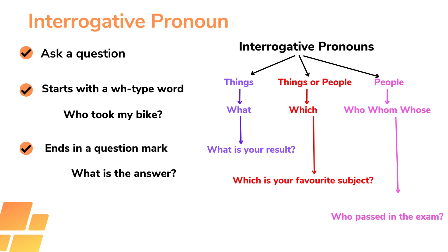Similarly, the second example is: 'Which is your favorite subject?' — the word 'which' is used for things. And lastly, the third example: 'Who passed in the exam?' — so 'who' is the interrogative pronoun here and is used for a person. These are the types of interrogative pronoun.